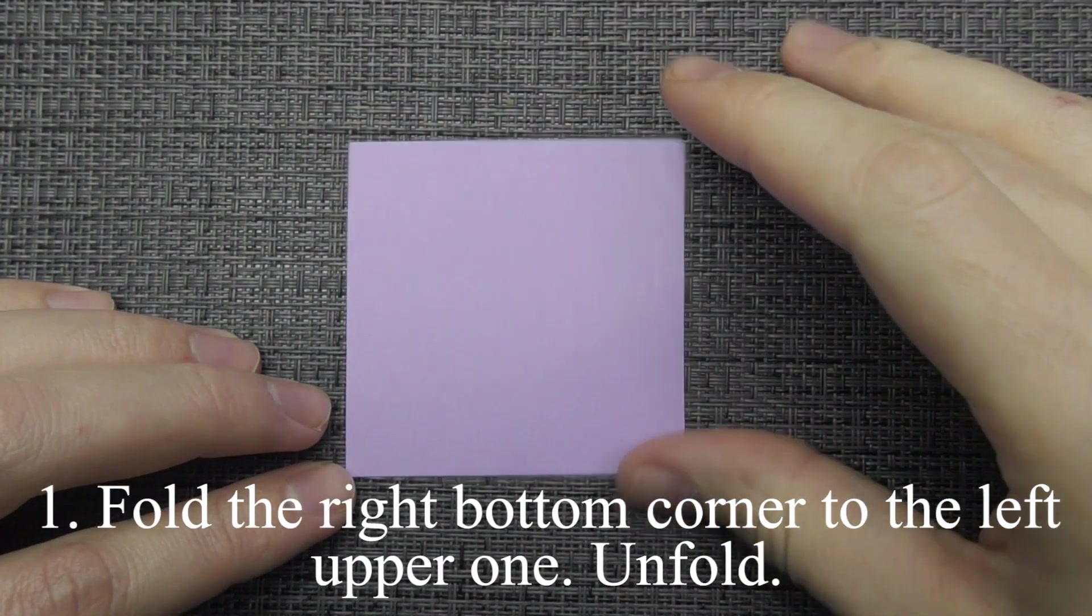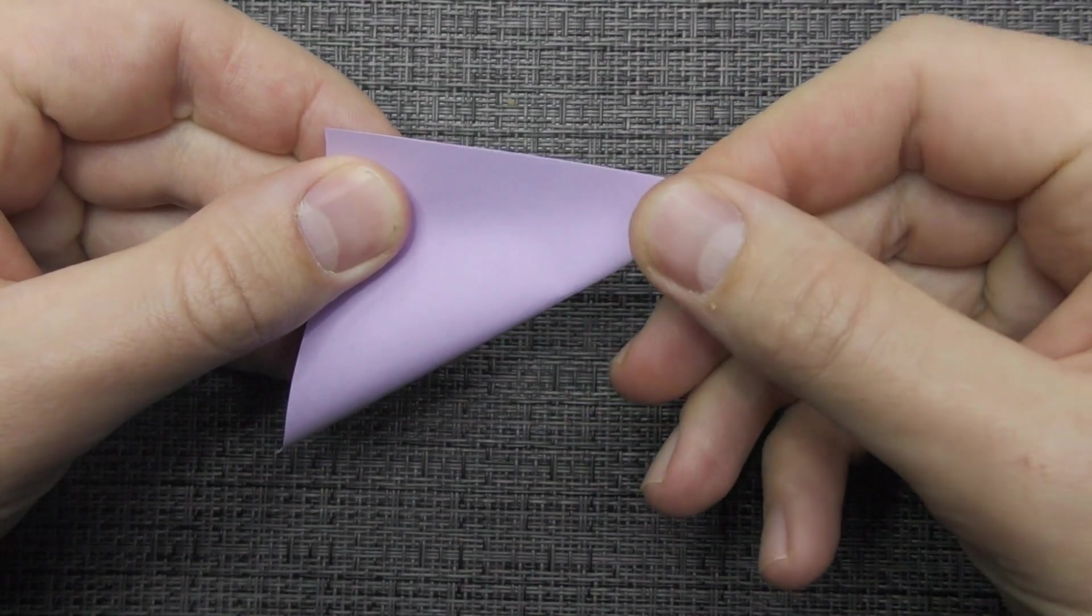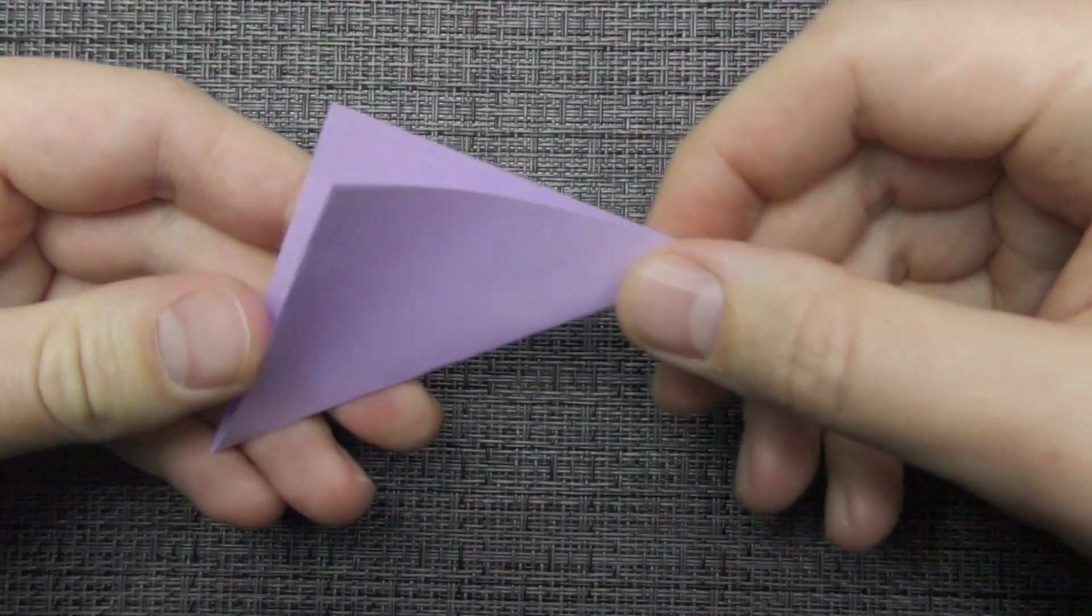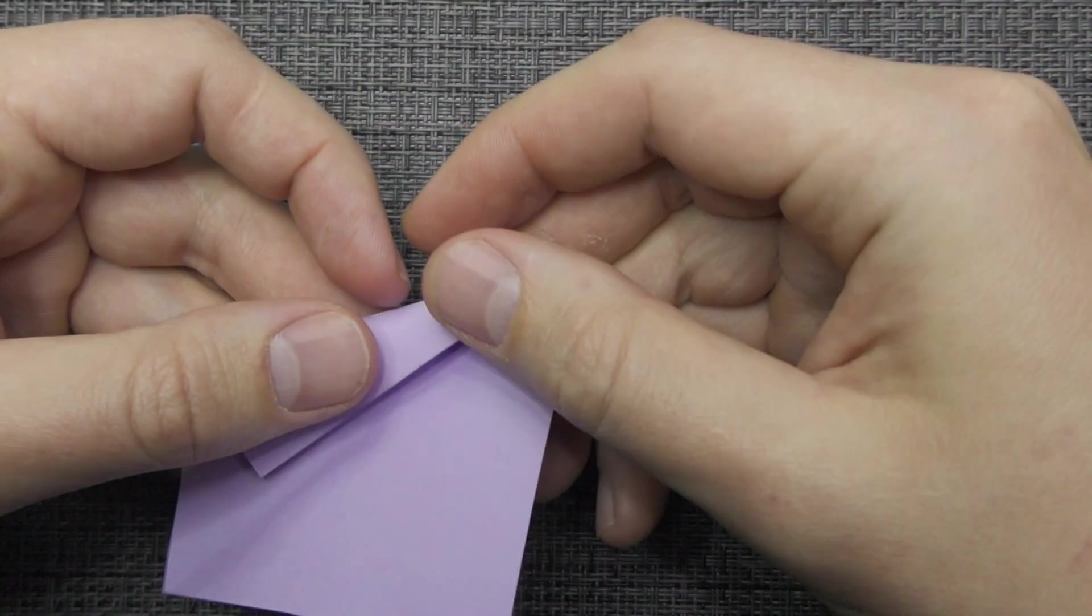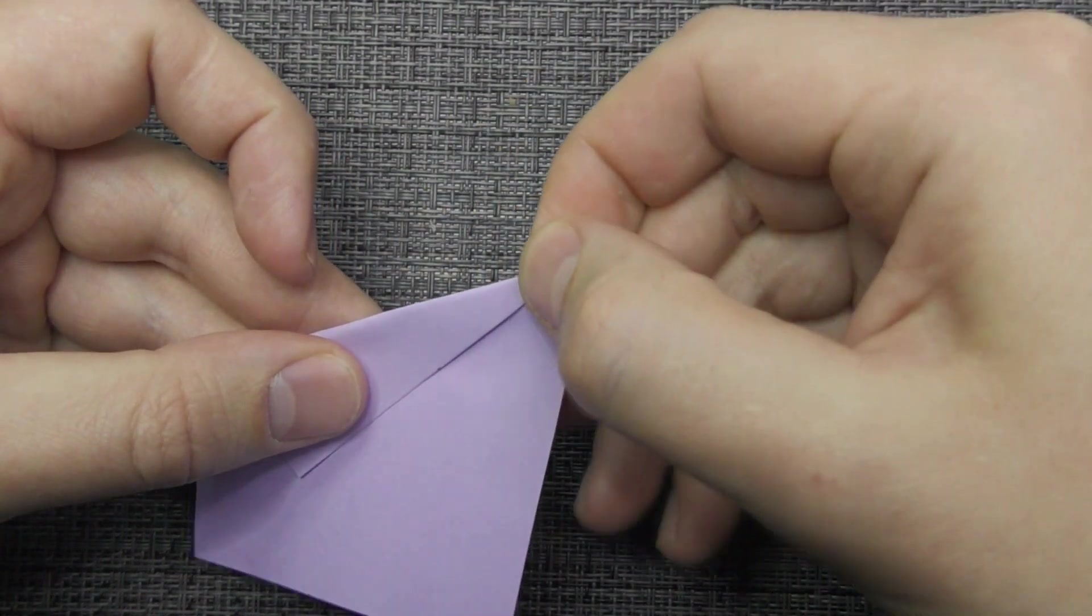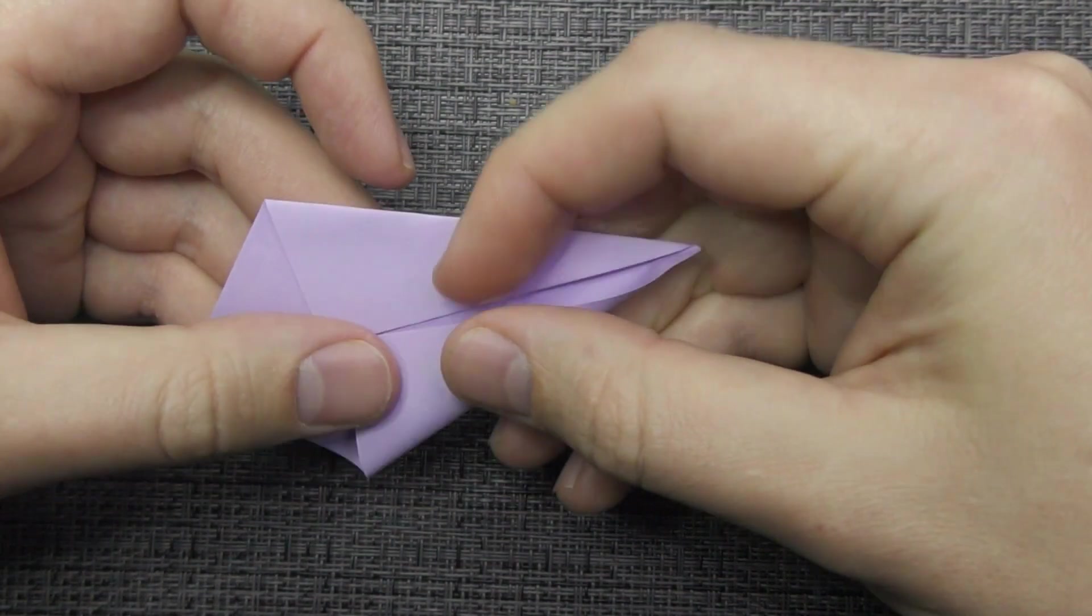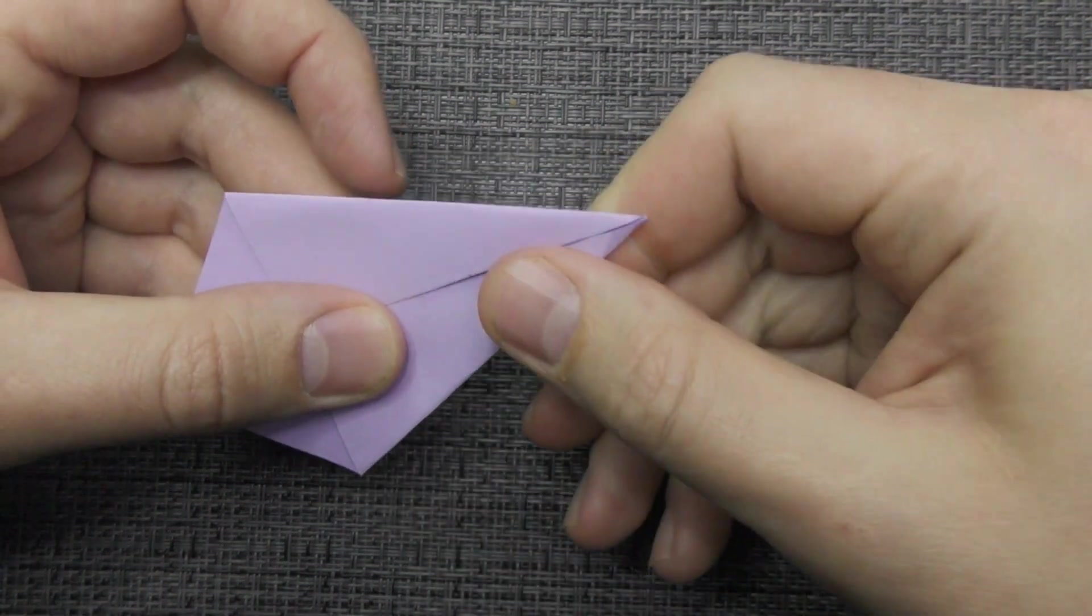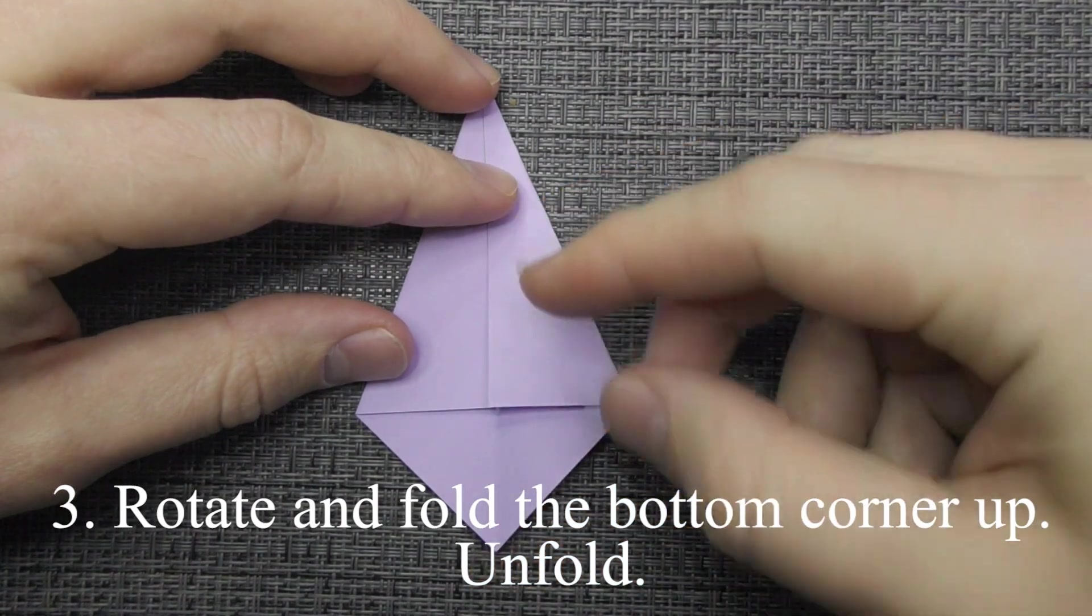Fold the right bottom corner to the left upper one. Unfold. Fold these edges to the center line. Rotate and fold the bottom corner up. Unfold.